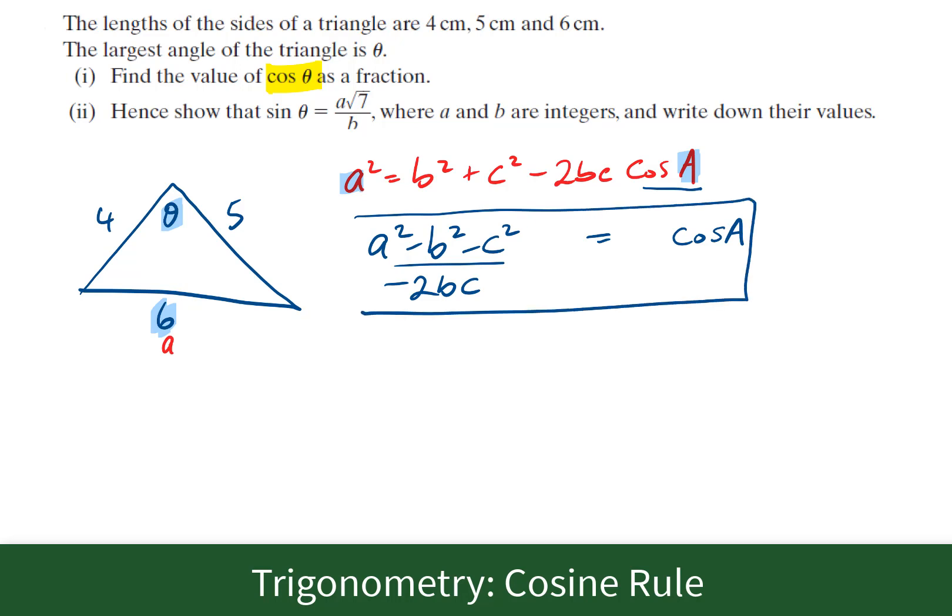Now I'm going to sub the numbers that we have into this. So cos theta is equal to 6 squared minus 4 squared minus 5 squared, all over negative 2 times 4 times 5. I take out the calculator and put that into it, and I get 1 over 8 as the answer.